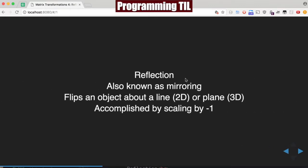So reflection is also known as mirroring. It flips an object over a line or a plane and is accomplished by scaling by negative 1.